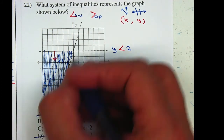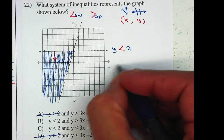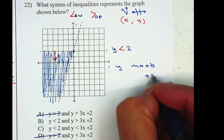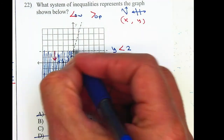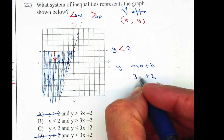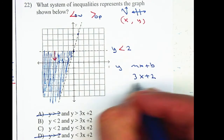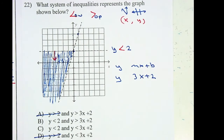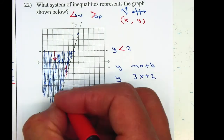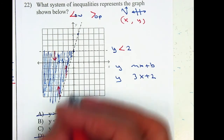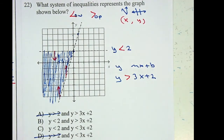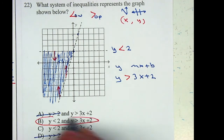On the second equation, the y-intercept is 2, so we have y equals mx plus b where the y-intercept is positive 2. The slope is up 3 to the right 1, so it'll be 3 over 1, or just 3. They shaded the top, not the bottom, so it'll be greater than. Therefore, your answer is letter B.